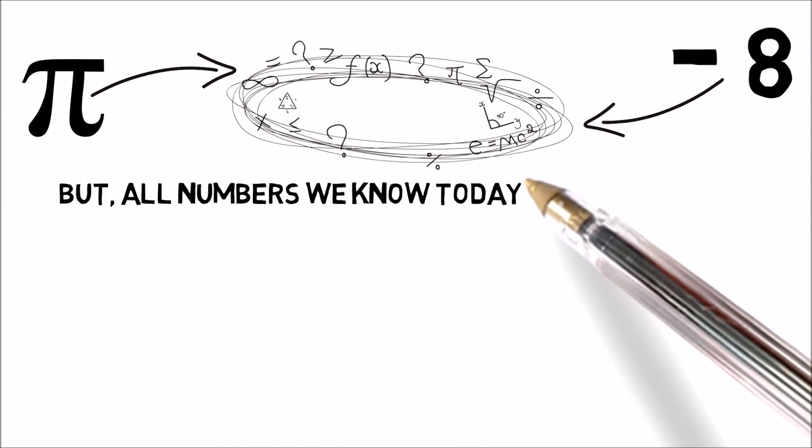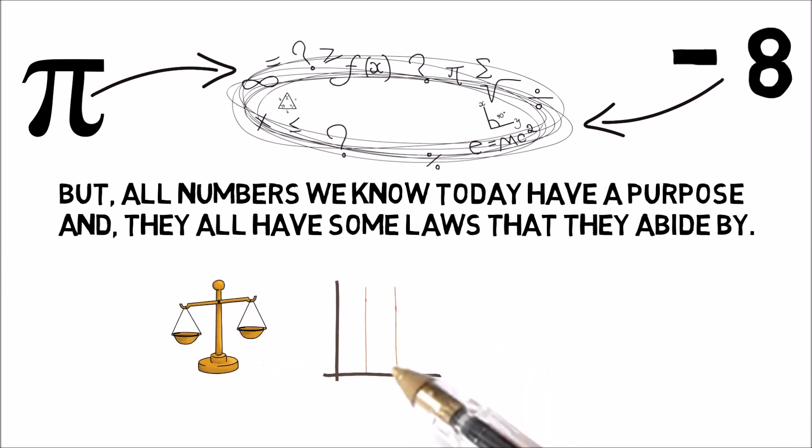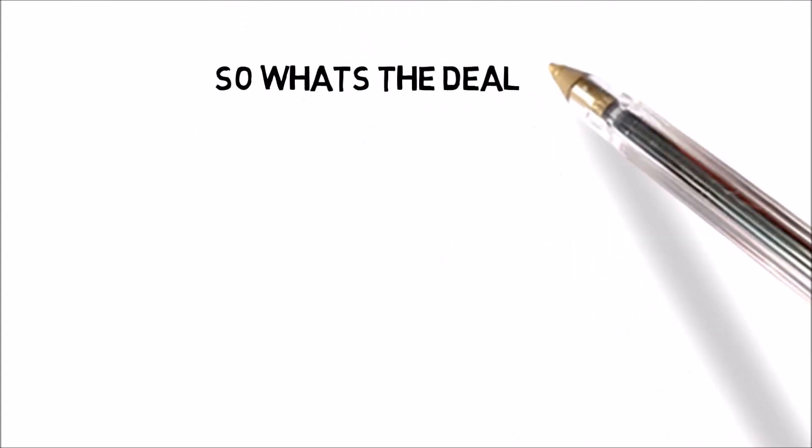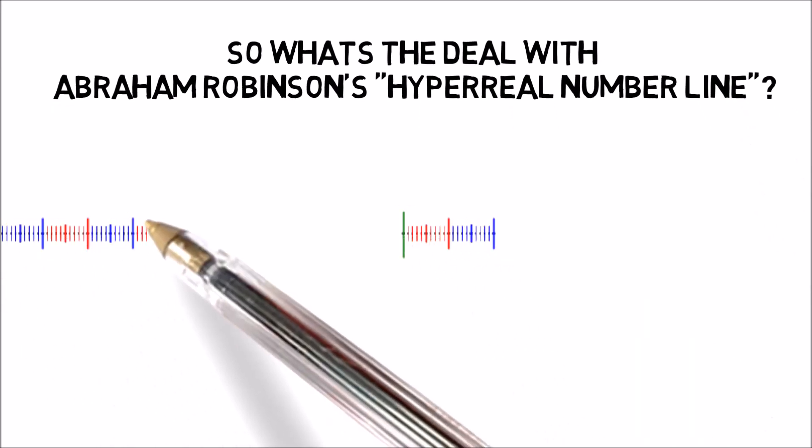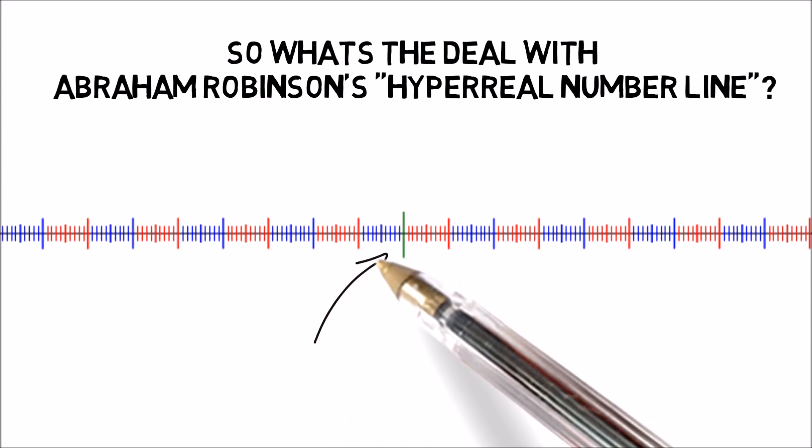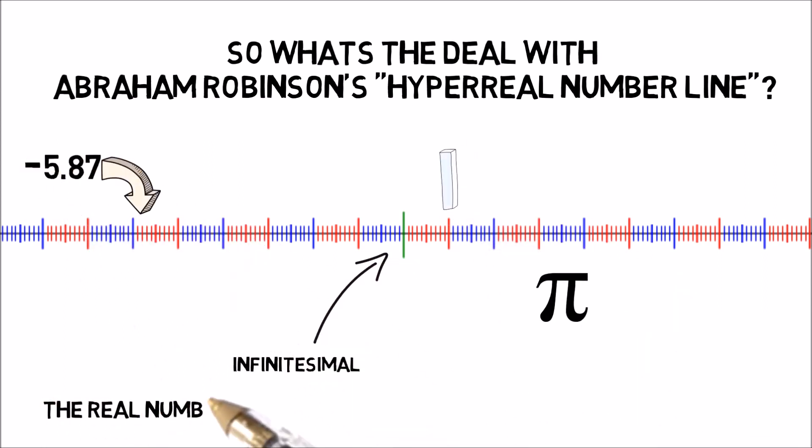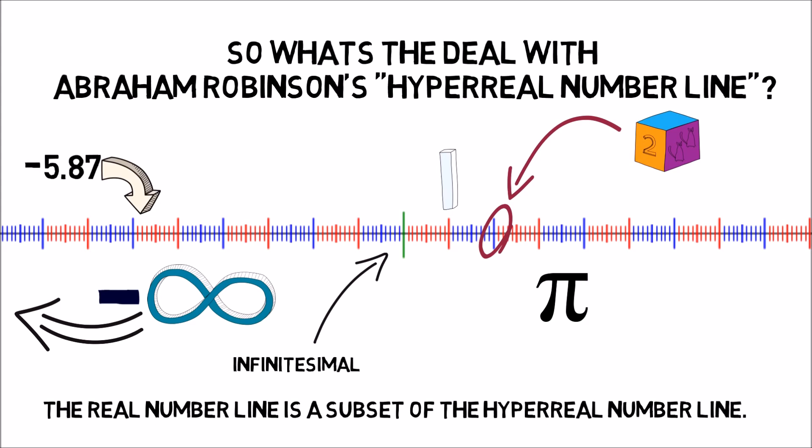But these numbers all had practical purposes. And they all had laws that they abide by, that govern their actions. Laws that allow us to predict what will happen to the numbers when we alter them. So, what's the deal with Abraham Robinson's hyperreal number line? It's pretty simple. This new number line has these infinitesimals in it, along with every real number. The real number line is a subset of the hyperreal number line. Meaning that all the real numbers, such as 1, 2, 7 billion, and pi, all these numbers are inside of the hyperreal number line.